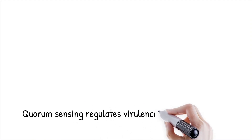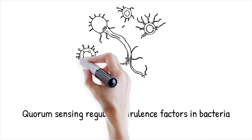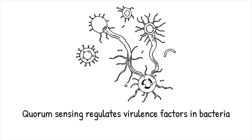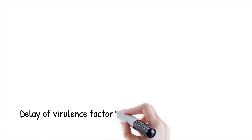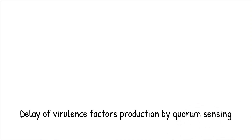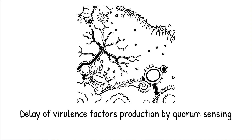Many pathogenic bacteria rely on quorum sensing to regulate the production of virulence factors, such as toxins, enzymes, and adhesion proteins. By coordinating these activities, bacteria can ensure that their attack on a host is more effective and timed for maximum impact. Quorum sensing allows bacteria to delay the production of virulence factors until they reach a critical population density, reducing the likelihood of detection by the host immune system during early stages of infection.